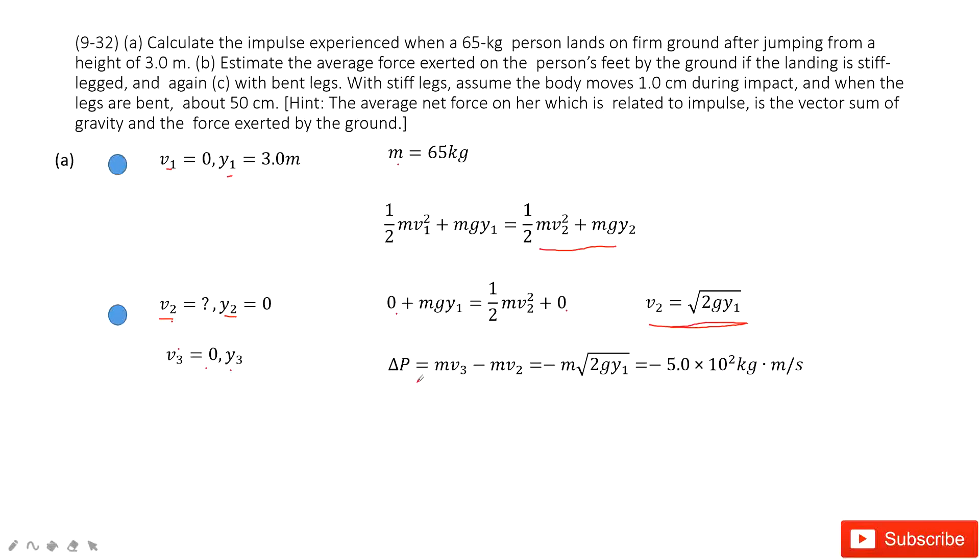Now, can we find impulse? Sure, impulse is just the change of momentum. So we use mv3 minus mv2, and there we get it. This one is negative 500 kg·m per second.